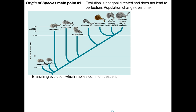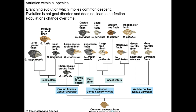One of Darwin's main points is that all living things share a common ancestor and are part of the tree of life. Returning to the finches: all finches share a common ancestor from the mainland. As finches spread to different islands, each island represented a different environment, and therefore the finches came to look different.